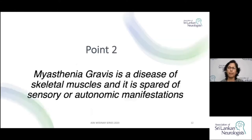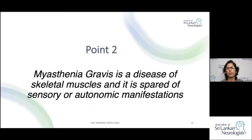The second point: Myasthenia Gravis is a disease of skeletal muscles. Acetylcholine receptors, which the antibodies target, are found only in skeletal muscles, so it does not affect smooth muscles or cardiac muscles — only skeletal muscles. Any skeletal muscle may get affected. There are no sensory or autonomic manifestations from the disease itself; autonomic manifestations, if seen, are related to treatment.